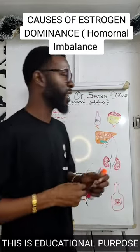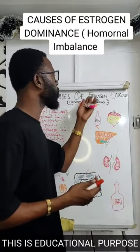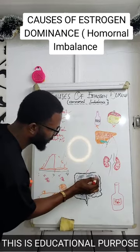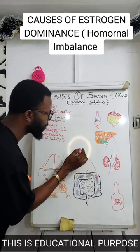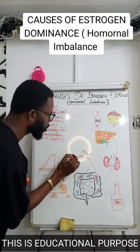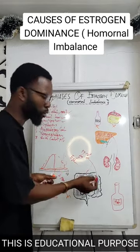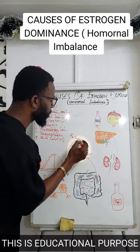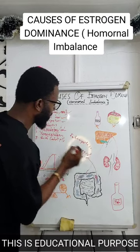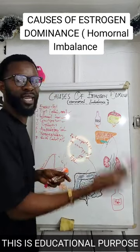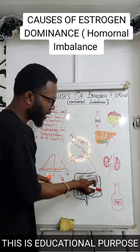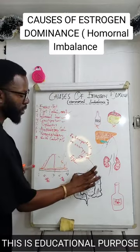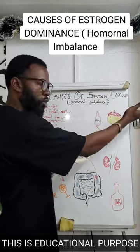The next cause is constipation. How can constipation cause estrogen dominance? In the large intestine, some of the fecal matter can be recycled back to estrogen. That process is called enterohepatic recirculation — the process by which some of the stools in the large intestine are recycled back to produce estrogen. So constipation can also lead to excess estrogen or estrogen dominance.